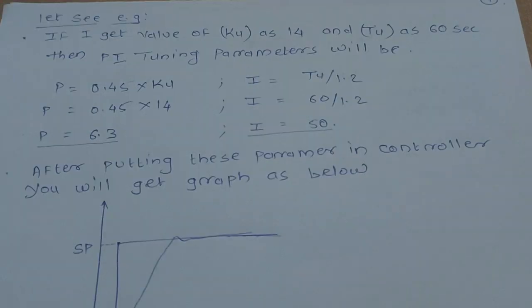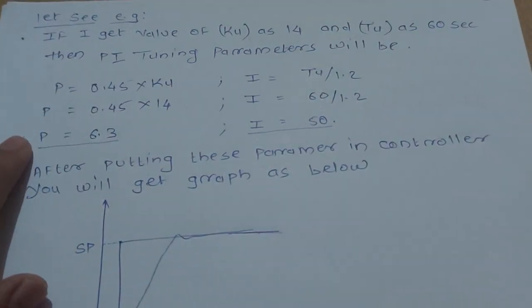For example, if I get value of Ku as 14 and Tu as 60 seconds, then the PI tuning parameters will be P equals 0.45 into 14.